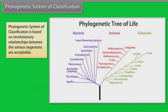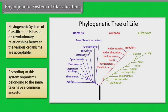Phylogenetic system of classification is based on evolutionary relationships between the various organisms. According to this system, organisms belonging to the same taxa have a common ancestor.